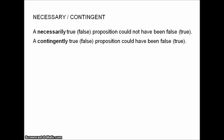If you imagine that you're given the power to change the universe in any way you like — you can alter it, having the power of a god — a necessarily true proposition is one that would be true no matter how radically you change the nature of the world. You can't change a necessarily true proposition into a false one. You can only change the contingently true propositions.